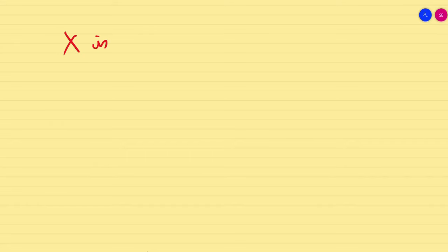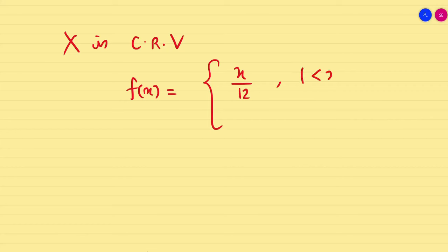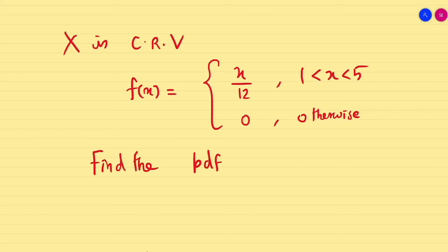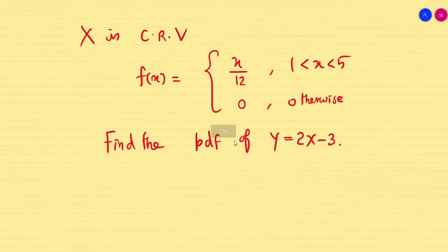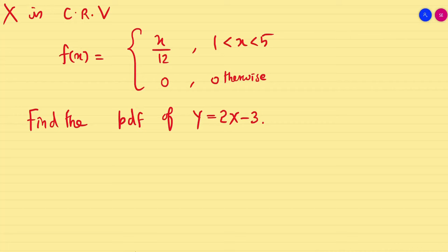Now let us go into a problem for a clear picture. X is a continuous random variable and f_X(x) = x/12 for x in [1, 5], and 0 otherwise. My job is to find the PDF of y = 2x - 3.